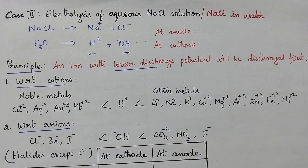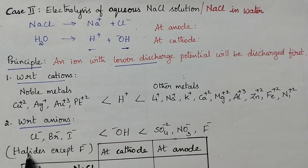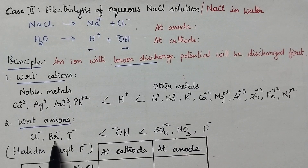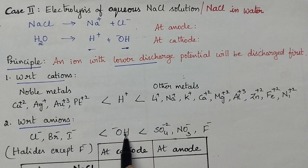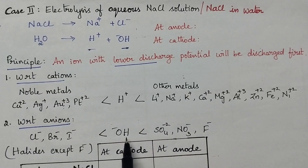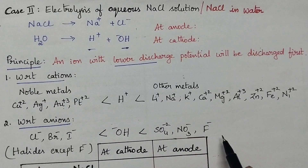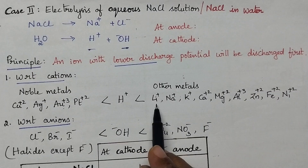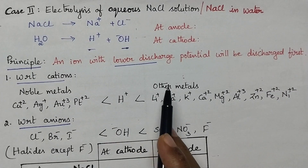With respect to the anions, always halides except fluoride — that means chloride, bromide, and iodide — are having lower discharge potential than hydroxide ions. That means chloride and bromide will be discharged first with respect to hydroxide ions. And hydroxide ions are having lower discharge potential than sulfate, nitrate, and fluoride. So hydroxide ions will be discharged in the presence of sulfate, nitrate, or fluoride. From these two rules we can predict what type of anions and cations will be discharged first at the corresponding electrodes.